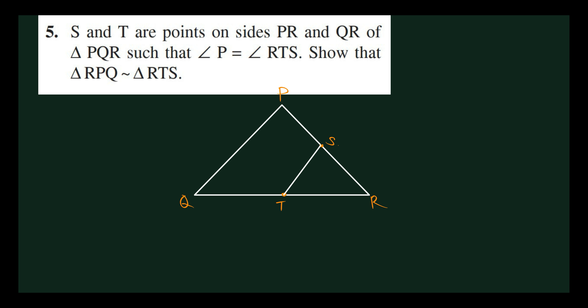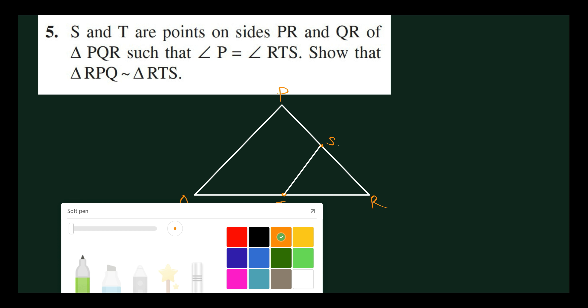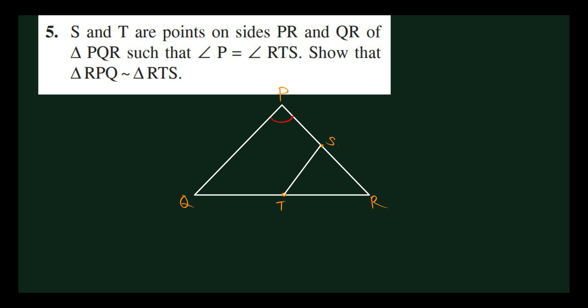S and T are the points on the sides PR and QR of triangle PQR, such that angle P equals angle RTS. Then we have to show that triangle RTQ is similar to the big triangle RTS.